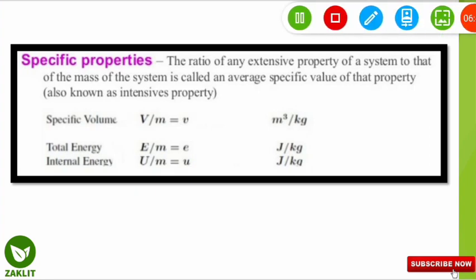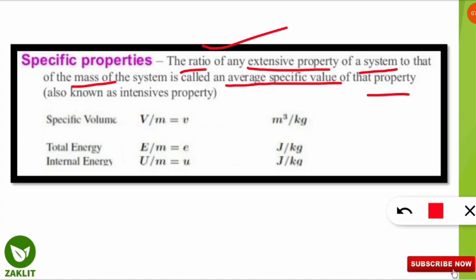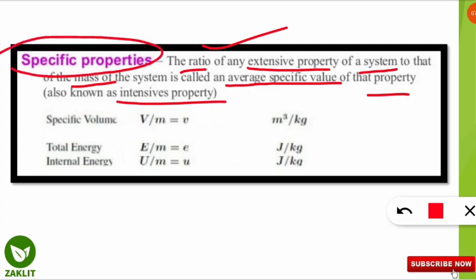Specific properties are the ratio of any extensive property of a system to the mass of the system, giving the average specific value of that property. This is also called an intensive property because dividing by mass removes mass dependency. For example, specific volume is obtained by dividing volume by mass.